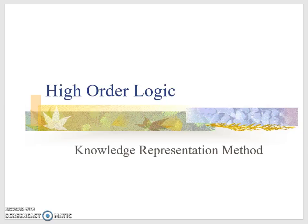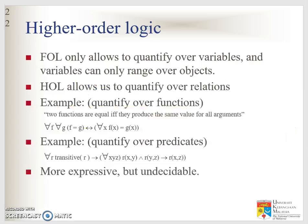As I said before, in first order logic we cannot give a value to some objects. FOL only allows quantifying over variables, and variables can only range over objects. But higher order logic allows quantifying over relations as well.